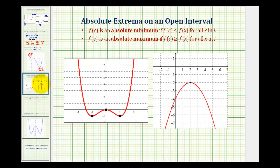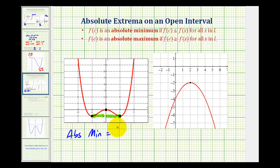For the function on the left, notice how the function value of negative one is the least function value on the entire interval, even though we're considering the function on an open interval. So we have an absolute minimum of negative one at x equals negative one and x equals positive one. However, the relative maximum is not an absolute maximum because there are function values greater than zero, so there's no absolute maximum — the function increases without bound to the right and to the left.